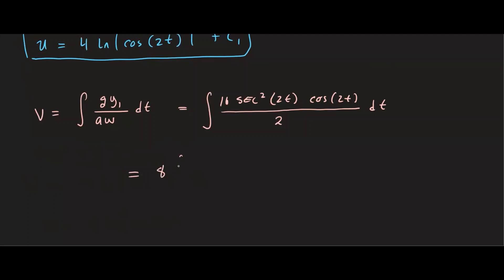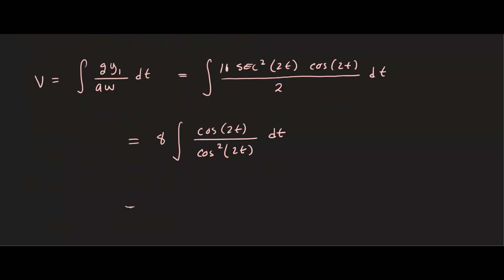And this gives us 8 outside the integration, secant squared and cosine 2t. I can rewrite secant as 1 over cosine. So we have cosine 2t over cosine squared of 2t dt. And you can see one of the cosines will cancel out. So this is a nice simple integration, we have 1 over cosine of 2t dt.